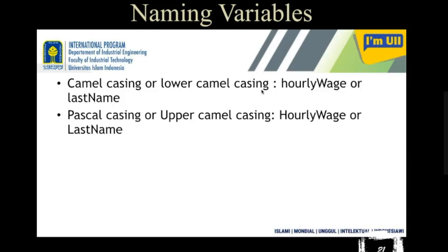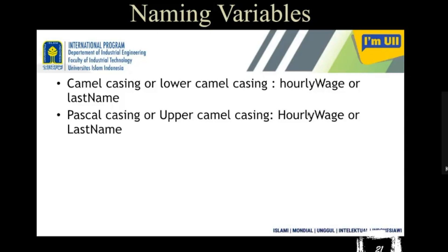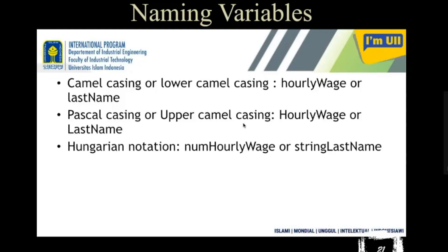That is called camel casing or lower camel casing. Another convention is called Pascal casing or upper camel casing, where the first alphabets of all words are uppercase. For example, 'HourlyWage' has 'H' and 'W' both uppercase, and 'LastName' has 'L' and 'N' both uppercase. This way is called upper camel casing.